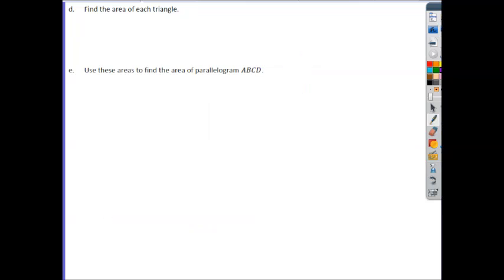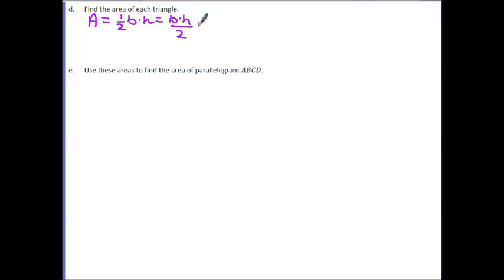Part D says find the area of each triangle. So we need to know the formula for area of a triangle. And we know that we can find this on our reference sheet. And there's a couple different ways to write this. You may see it as 1 half base times height. And an equivalent way to write this is base times height divided by 2. Whichever way you're comfortable with using.